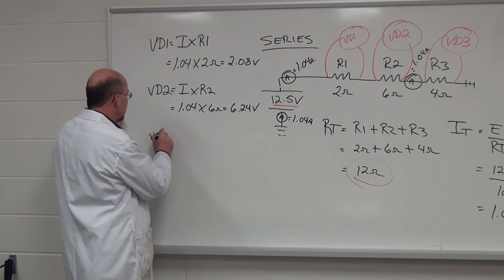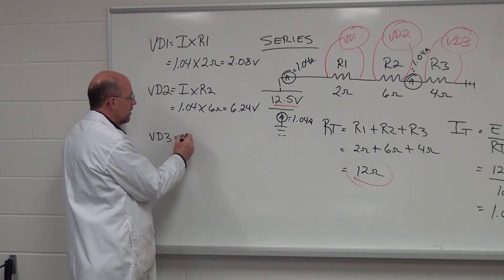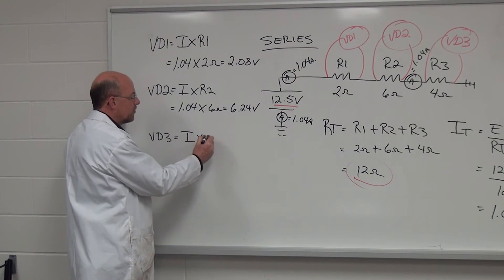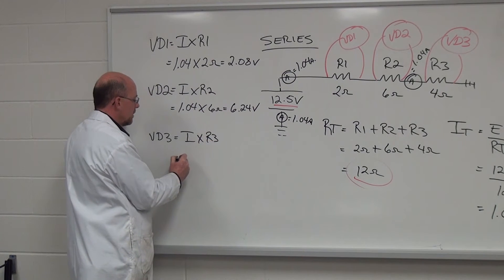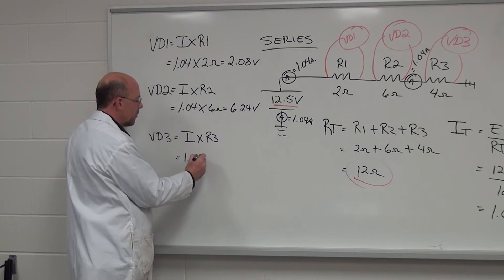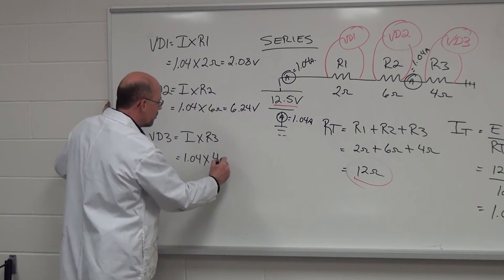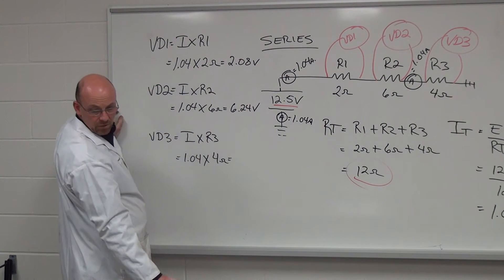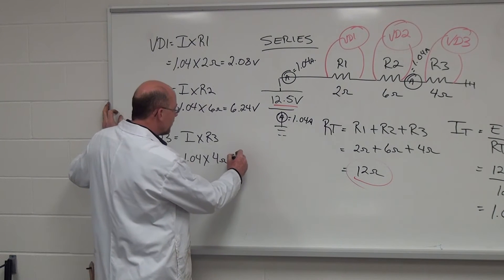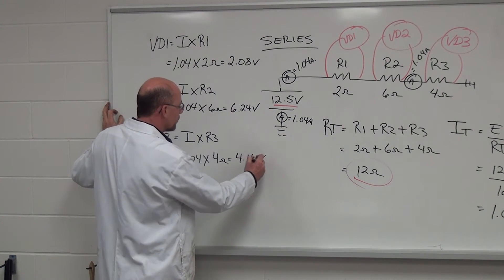Then we take a look at VD3, which equals I times R3, which equals 1.04 amps times the resistance of R3, which is 4 ohms, which equals 4.16 volts.